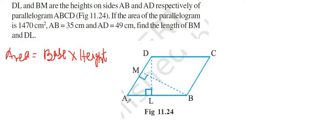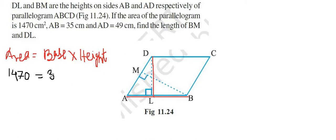First, if we take AB as the base, then DL will be the perpendicular distance, which is the height of the parallelogram. Applying this formula: area of parallelogram = 1470 = base × height = 35 × DL, where DL is what we have to find out.